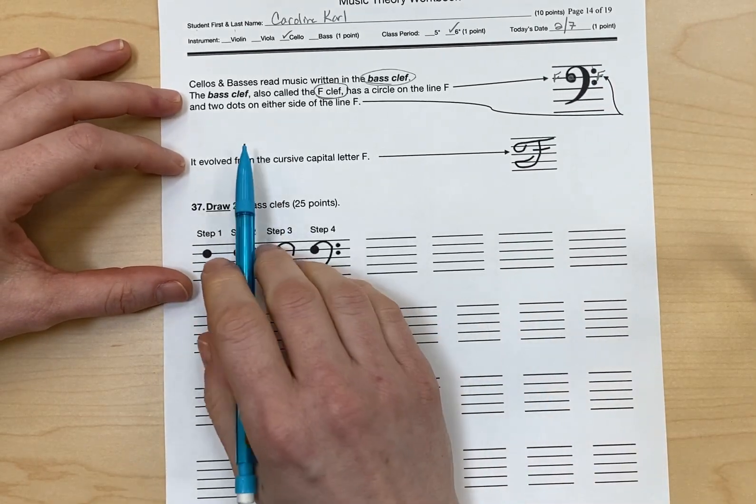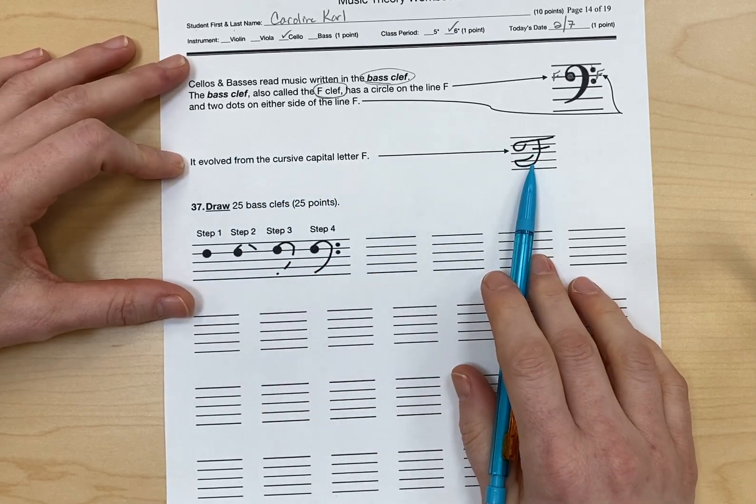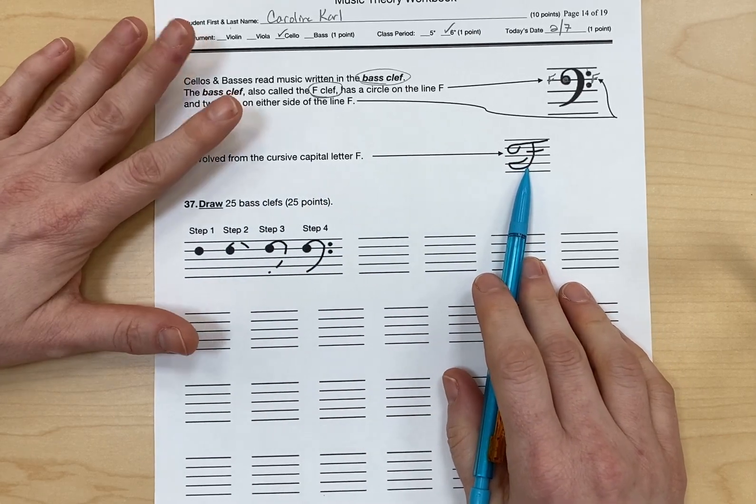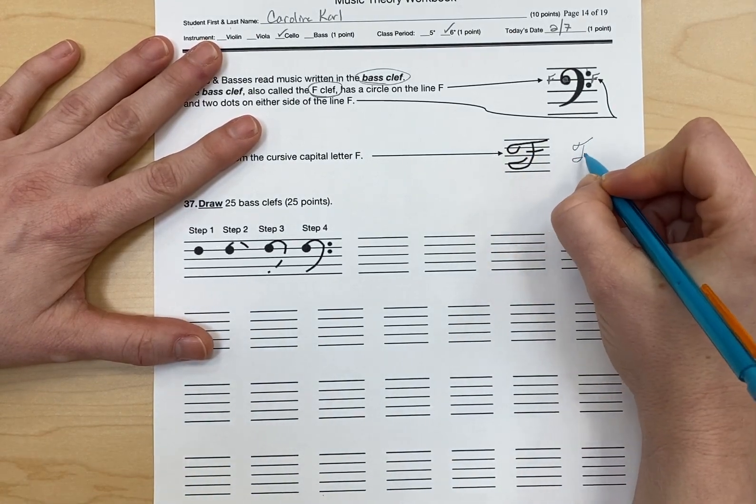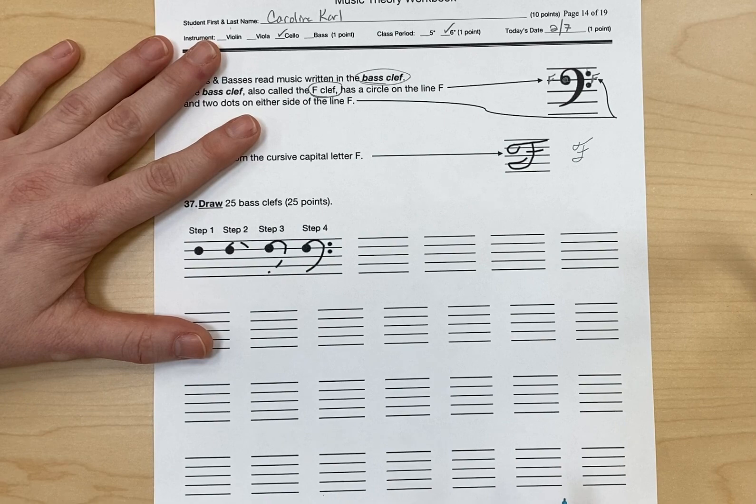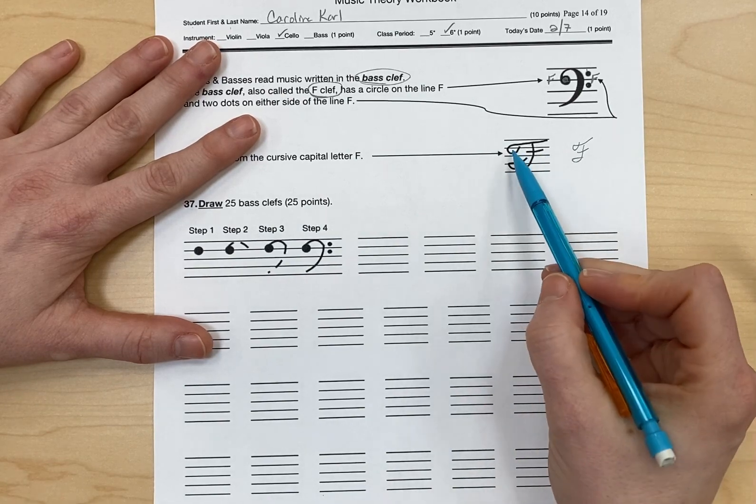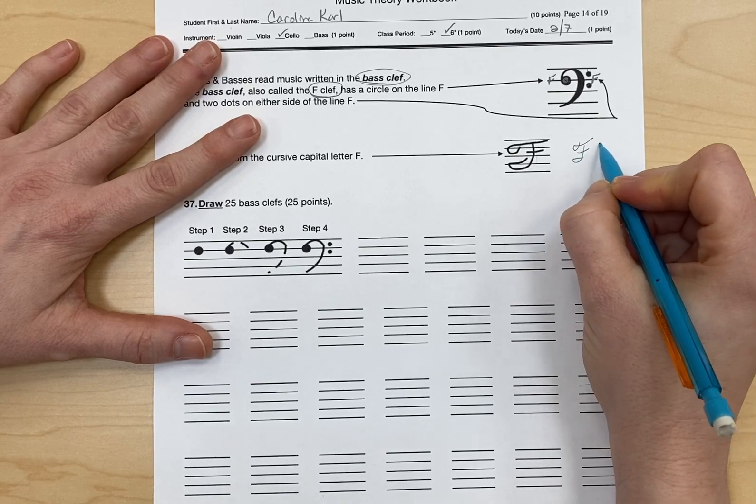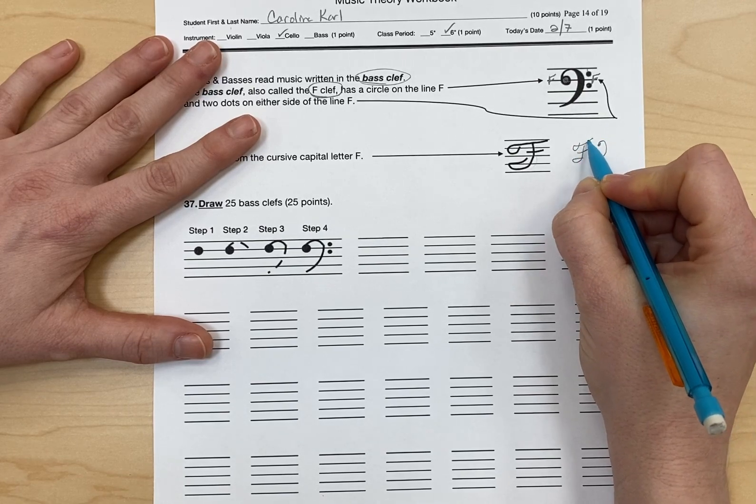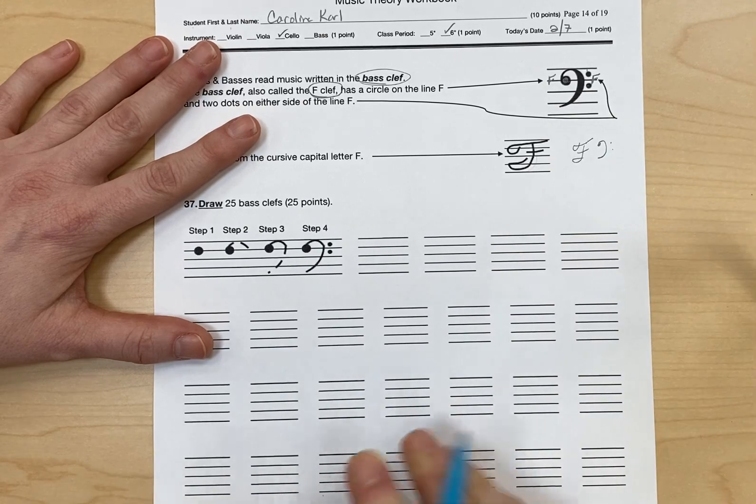It evolved from the cursive capital letter F. So I don't know if you know how to draw or write in cursive, but if you do, this is how you make an F. Capital F in cursive would be like that. And so you can see some similarities here to the bass clef, where instead of having this part, they went like this, and instead of the lines, they did two dots.